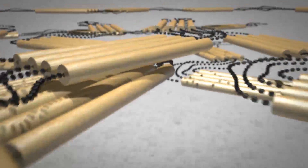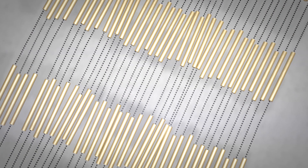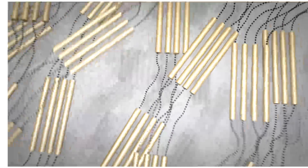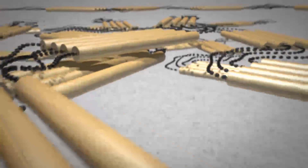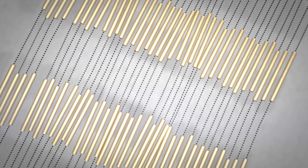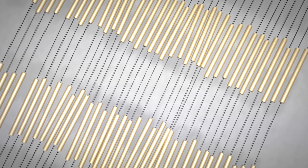The tendency for hard segments within polyurethanes to align with other hard segments, and the tendency of soft segments to coalesce with other soft segments, is called microphase separation. This phenomenon is responsible for the broad mechanical performance characteristics of polyurethanes. When urethane is relaxed, the soft segments allow it to bend freely. But when the urethane is stressed, the soft segments are extended until the chains align, and the crystalline hard segments then resist further deformation and produce high tensile strengths.